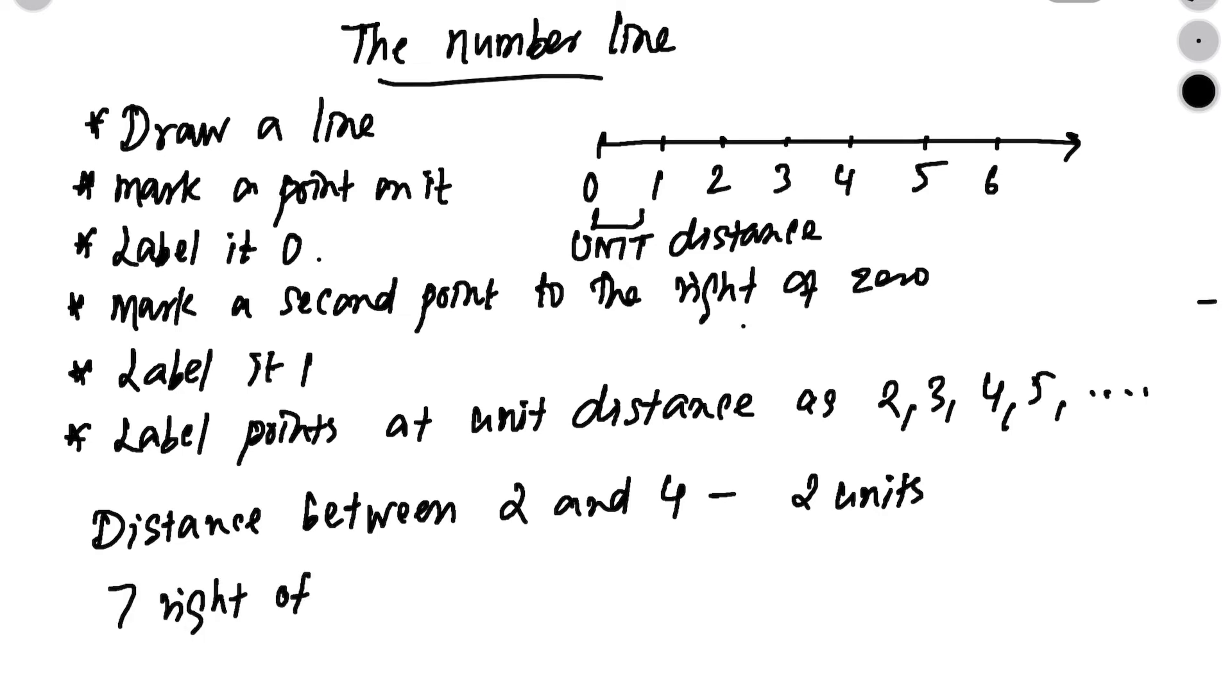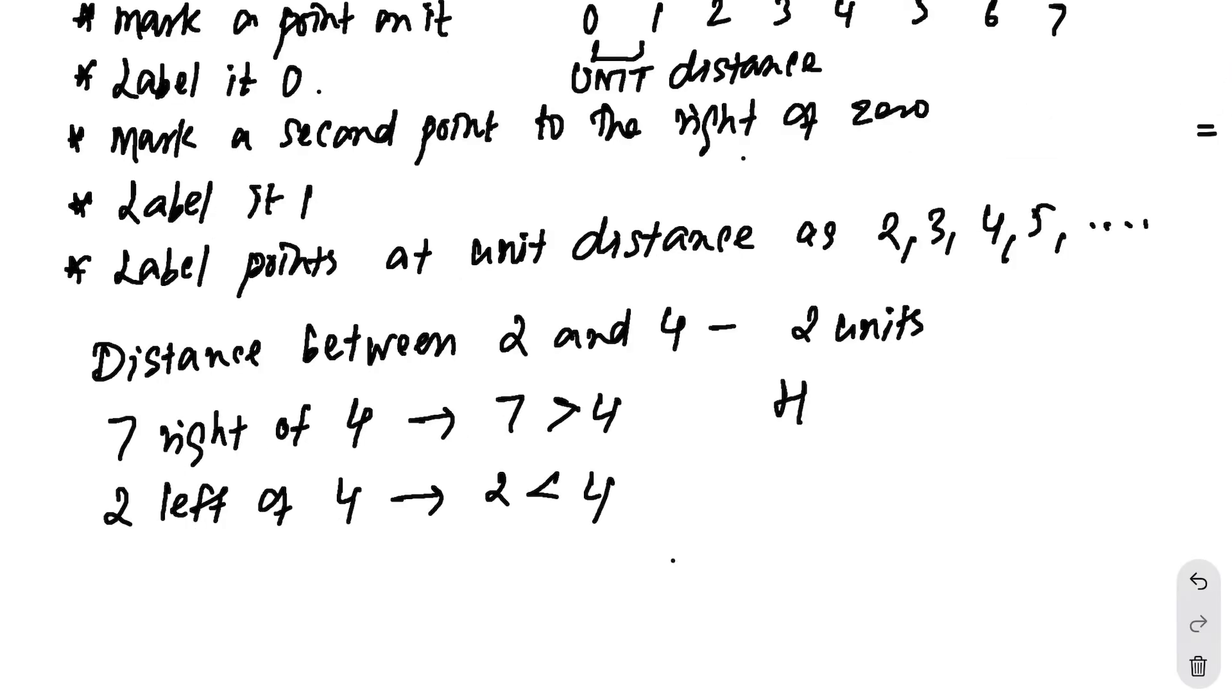Next, another thing you can observe in this number line is, 7 is coming to the right of 4. So, any number that is to the right of another number is always the greater number. So, here, 7 is greater than 4. And similarly, you can see that 2 is to the left of 4. So, any number which is to the left of another number in the number line is the smaller number. So, here, 2 is smaller than 4.